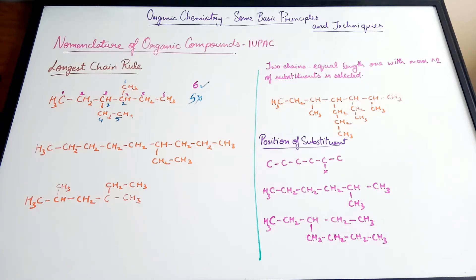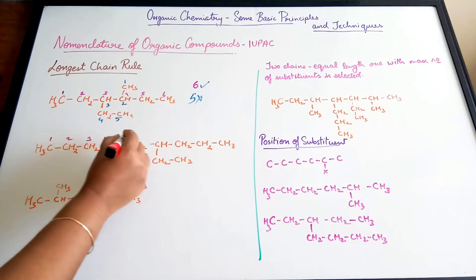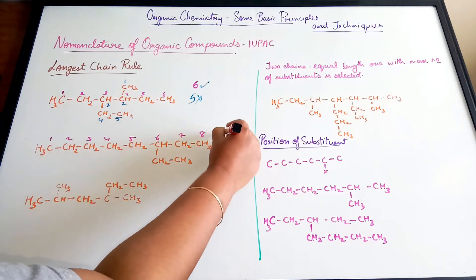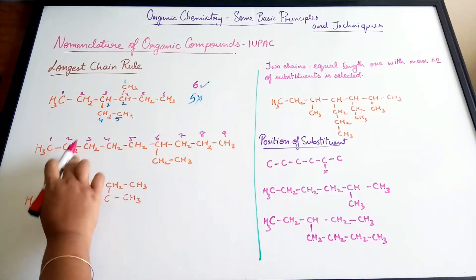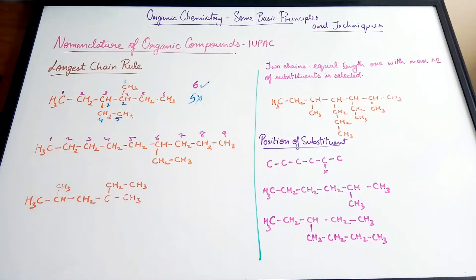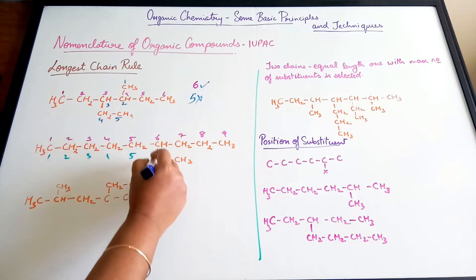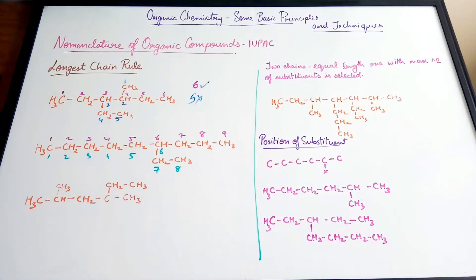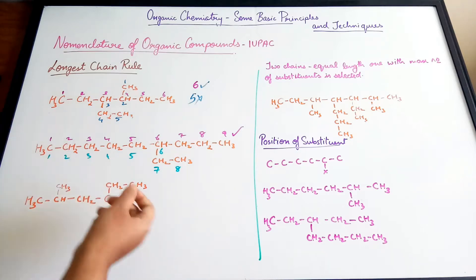For the second compound, you have a chain of 1, 2, 3, 4, 5, 6, 7, 8, 9 carbon atoms, or another possibility of 8 carbon atoms. Obviously, we will pick the 9 carbon atoms only.